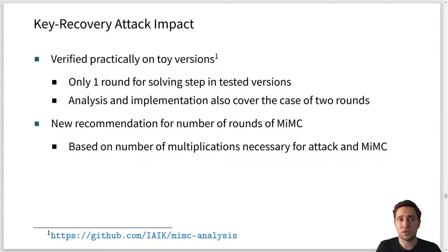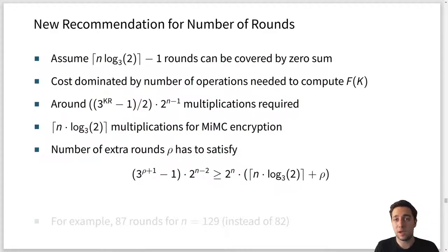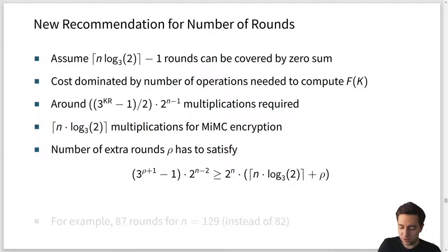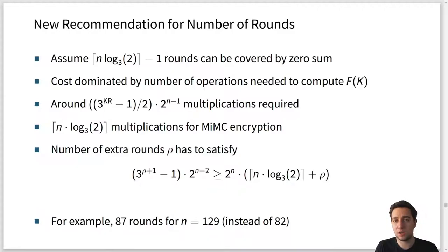We also give a new recommendation for the number of rounds of MiMC, since we can break the full original round number. This new recommendation is based on the number of multiplications necessary for the attack versus for MiMC itself. We try to find the extra number of rounds needed to raise the number of multiplications so that evaluating the polynomial becomes more expensive than brute force. The condition is given below for each field size. For example, for the 129-bit version of MiMC, where 82 rounds were originally used, we now recommend 87 rounds — plus 5 rounds.